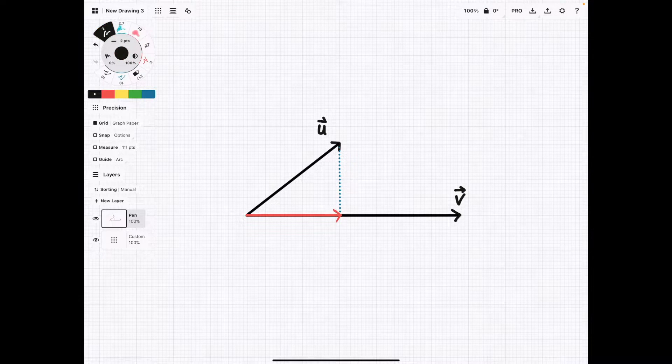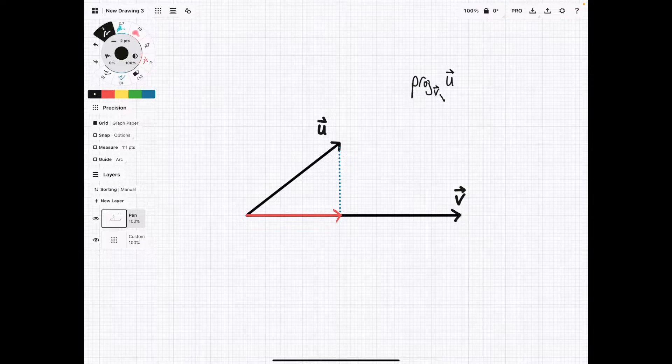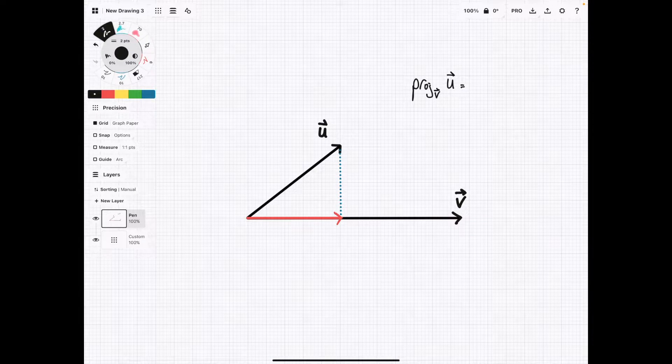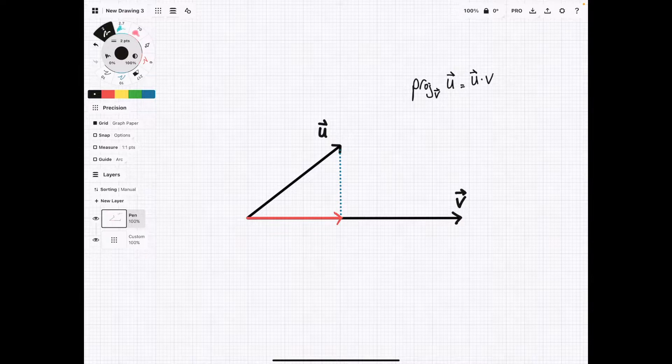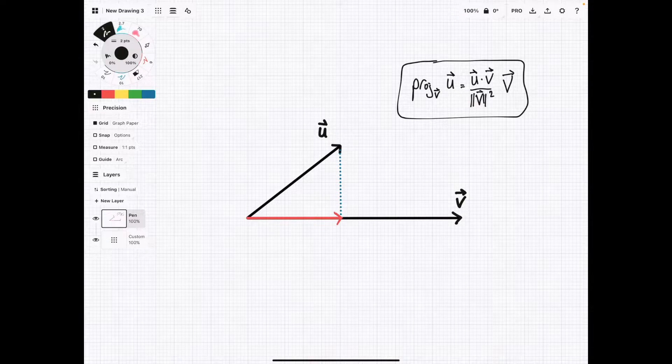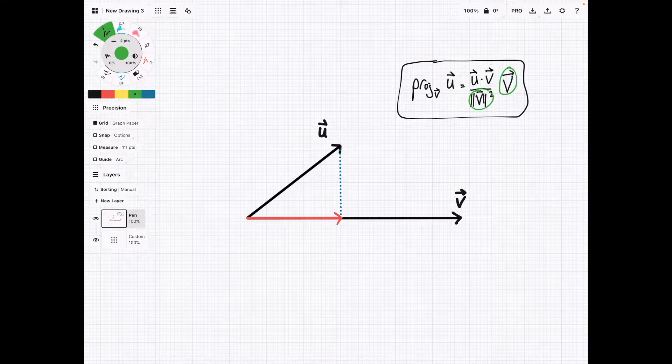The way we can do that is we can use this formula. So it's written the projection of u onto v, and you can remember this because the one that you're projecting goes on top, so the u here, and then the one you're projecting onto goes on the bottom. So it kind of makes logical sense as if we're projecting u onto v like this. But the formula is projection of u onto v equals u dot v over the magnitude of v squared times v. So the vector that you're projecting onto, in this case for us it's v, that's the one that's going to show up three times.